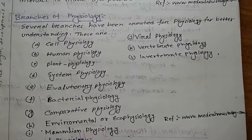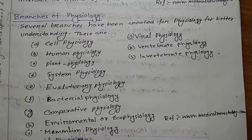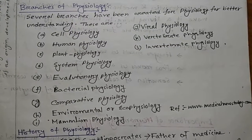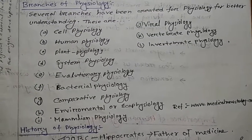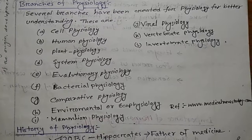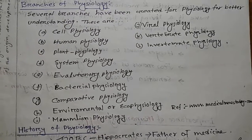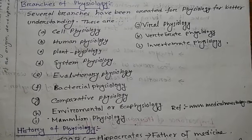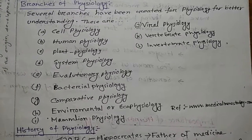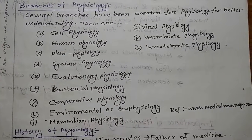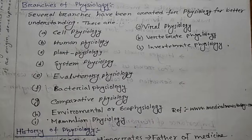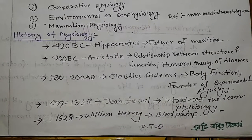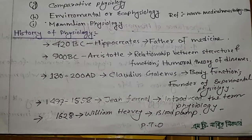Now, branches of Physiology. Several branches have been created for better understanding. These are: Cell Physiology, Human Physiology, Plant Physiology, System Physiology, Evolutionary Physiology, Bacterial Physiology, Comparative Physiology, Environmental or Ecophysiology, Mammalian Physiology, Viral Physiology, Vertebrate Physiology, and Invertebrate Physiology.